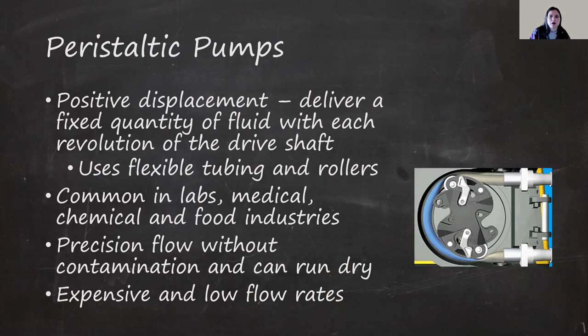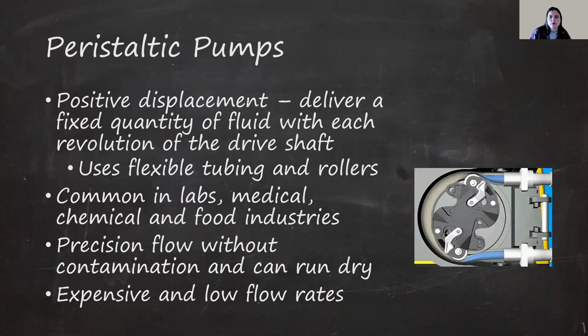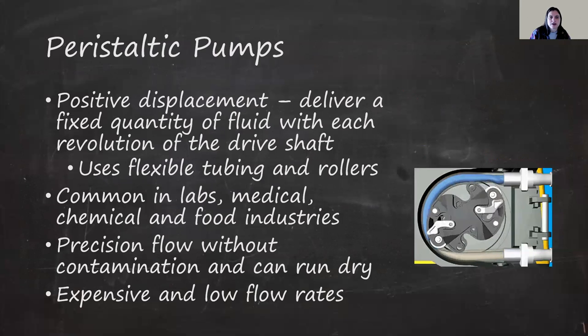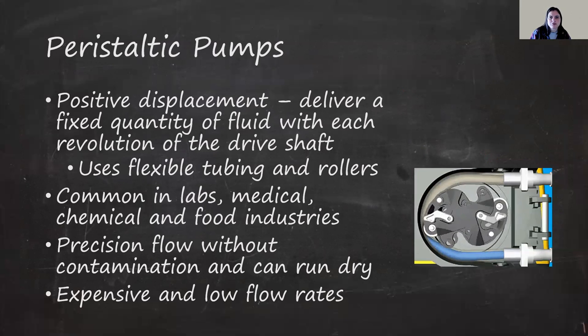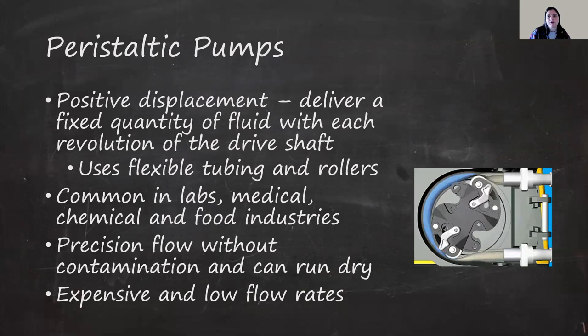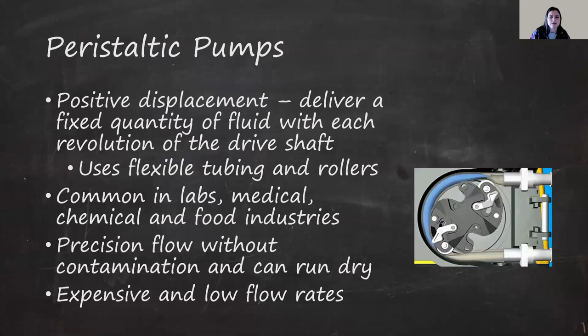Peristaltic pumps are a type of positive displacement pump which deliver a fixed quantity of fluid with each revolution of the drive shaft. Flexible tubing is placed between rollers and the housing. As the pump shaft turns the rollers, the rollers squeeze the tubing trapping a volume of water and forcing it through to the discharge location. These are most commonly seen in the labs around campus as they're very good with delivering precision volumes and prevent contamination. The fluid being transferred does not touch any of the moving parts of the pump so corrosion of the pump housing, gears, and motor does not occur. They're capable of moving viscous fluids and of running dry.